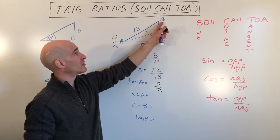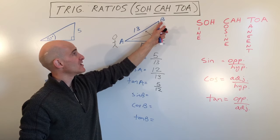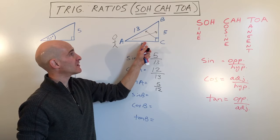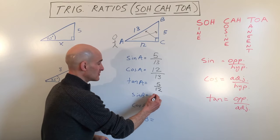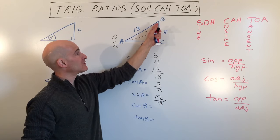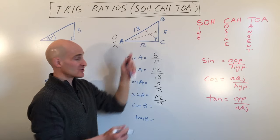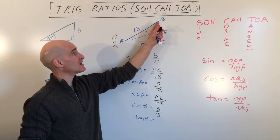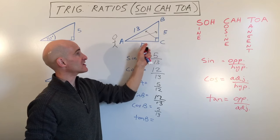Now let's move to angle B — we're changing our perspective to this vertex. The sine of angle B is opposite over hypotenuse: the opposite is 12, over the hypotenuse 13. The cosine of angle B is adjacent over hypotenuse: the adjacent is 5, over 13. And the tangent of angle B is opposite over adjacent: 12 over 5.